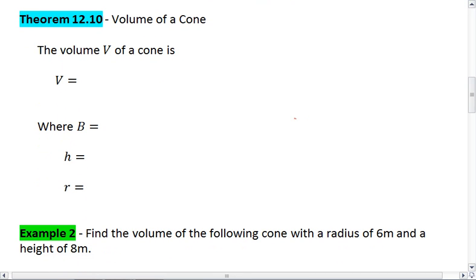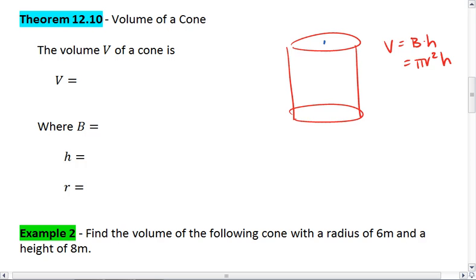We know we could have a cylinder where the volume is base times height or pi r squared h, and then we could fit a cone into this cylinder. Funny thing is, the volume of the cone is one-third the volume of the cylinder as well.